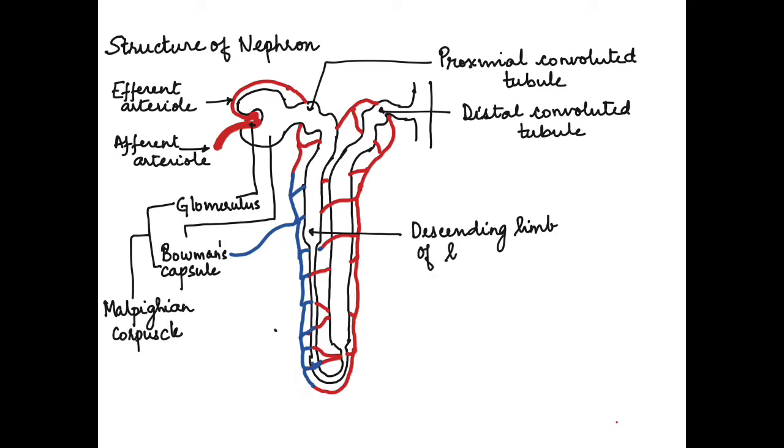The region between the proximal and distal convoluted tubules forms the loop of Henle. The proximal convoluted tubule moves down to form the descending limb of loop of Henle, which then forms a turn called the hairpin bend, and then moves upward to form the ascending limb of loop of Henle.